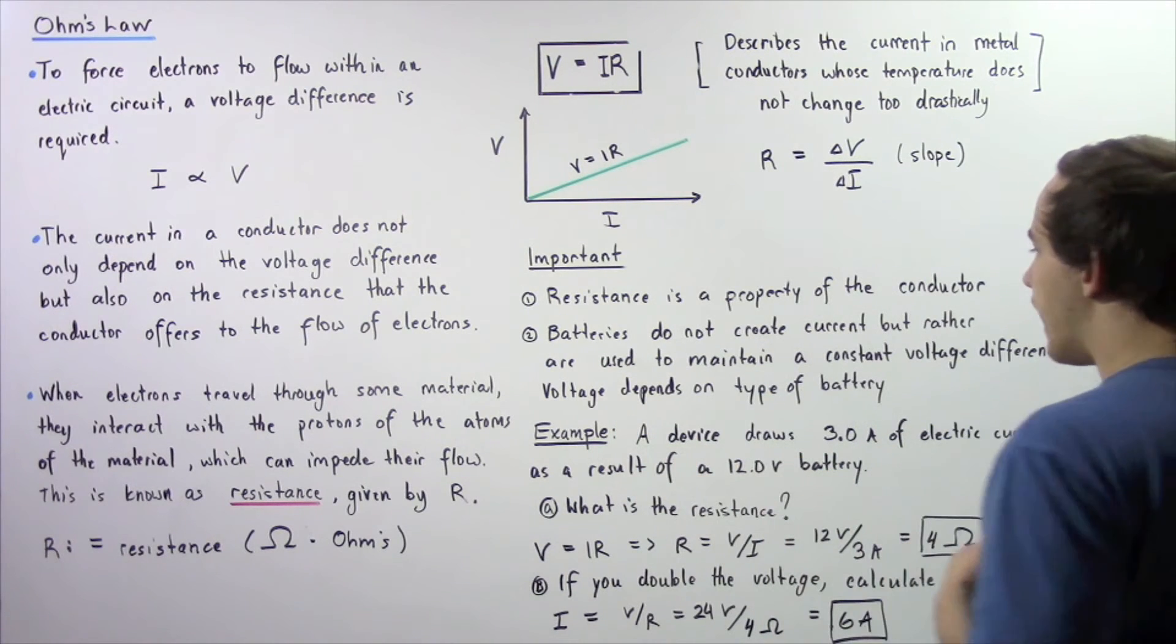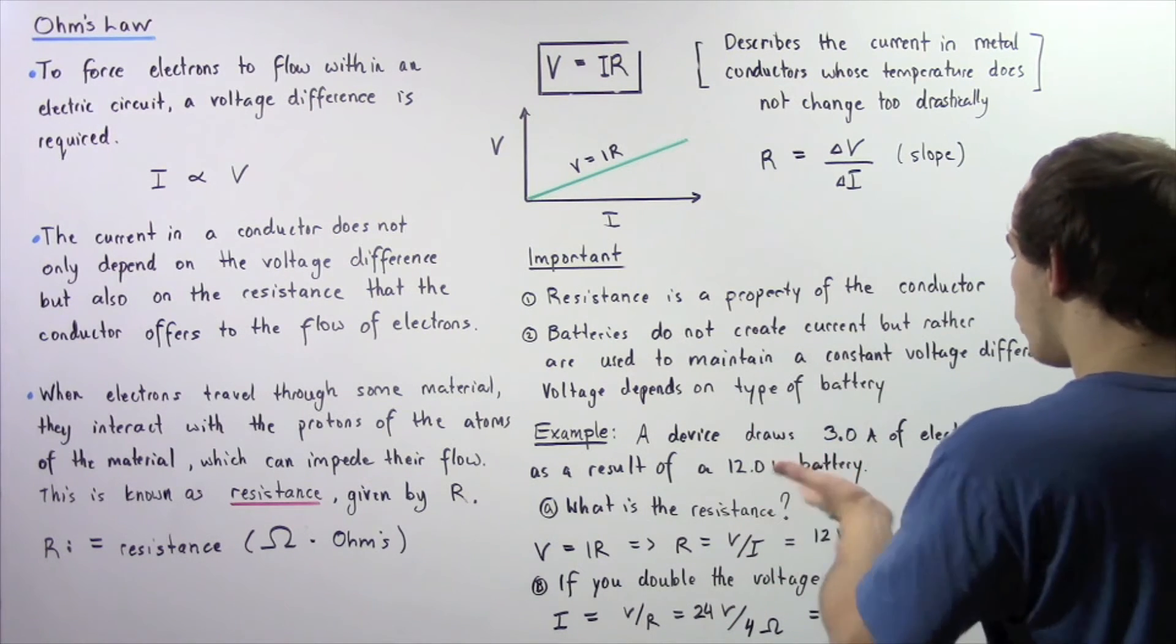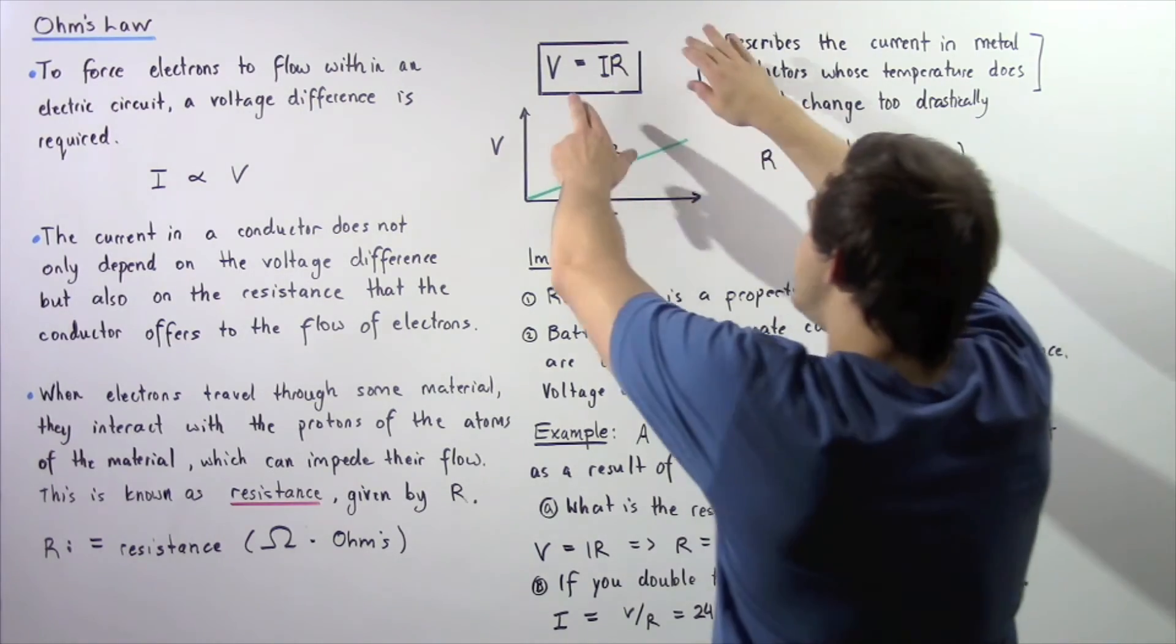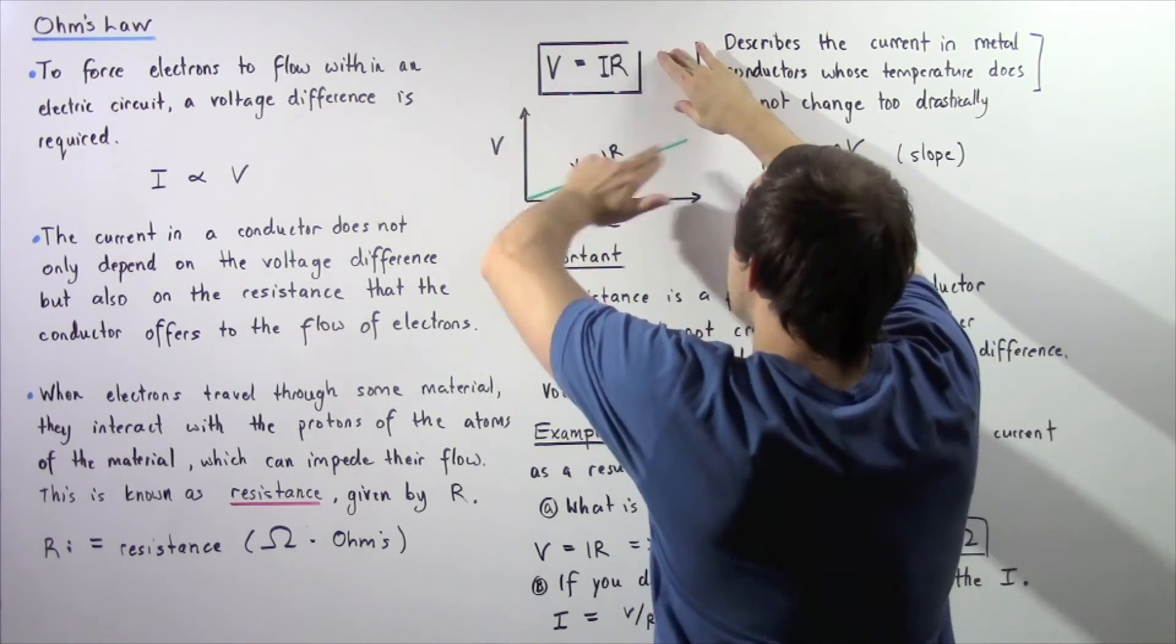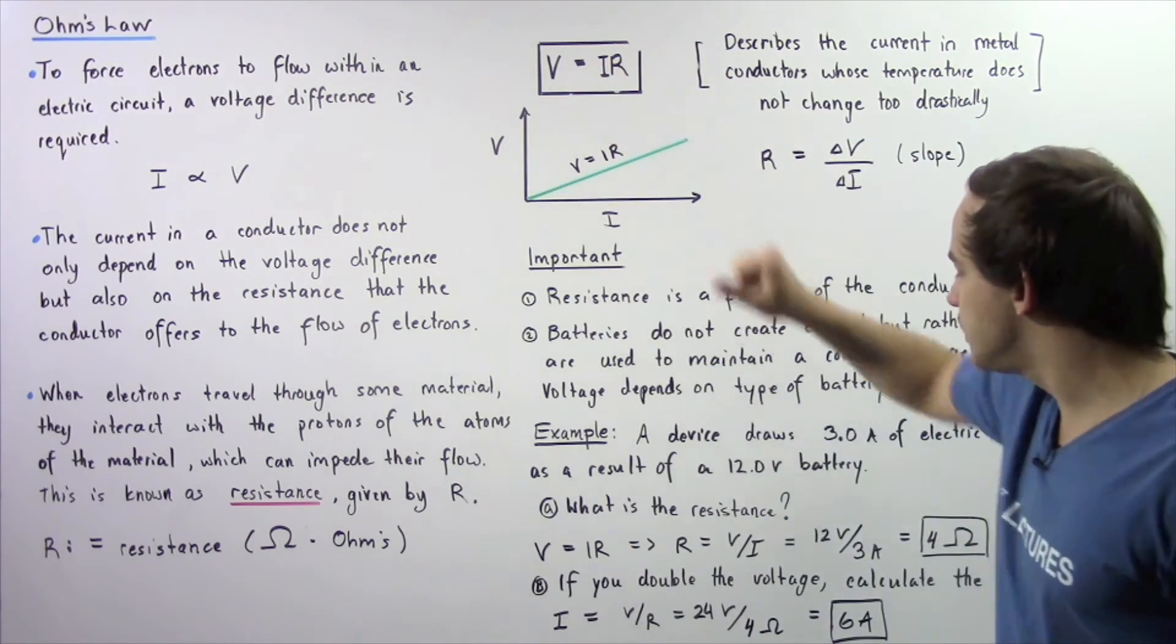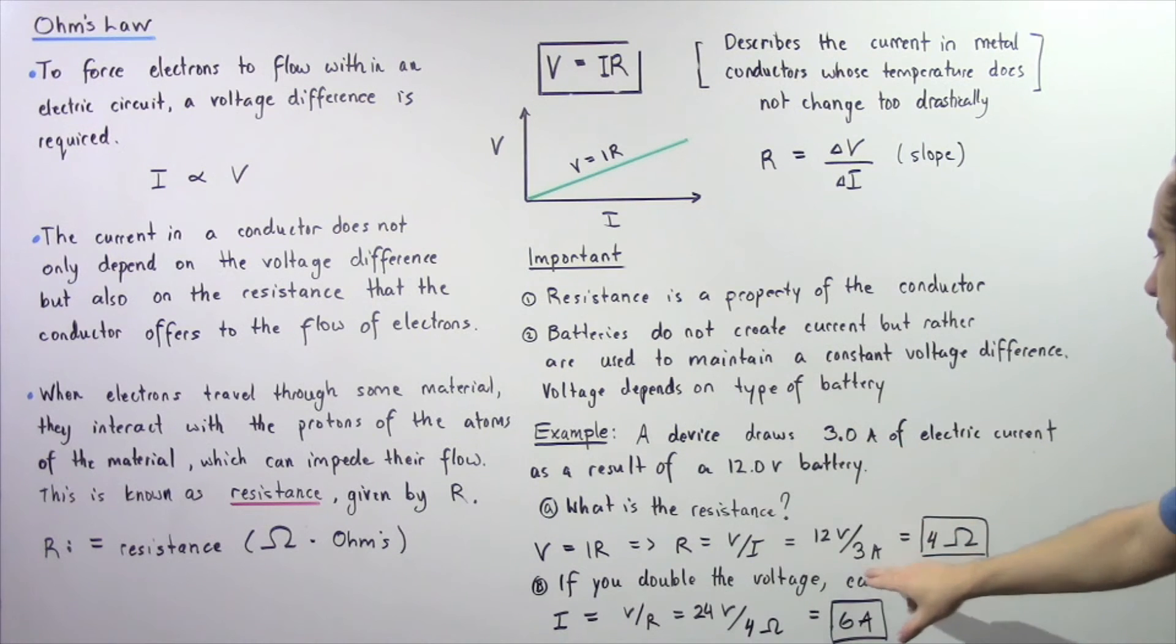Let's examine the following example. A device draws three amps of electric current as a result of a 12 volt battery. In part A, what is our resistance? We take Ohm's law, rearrange it and solve for resistance. We see that resistance is equal to voltage divided by electric current. So 12 volts divided by 3 amps gives us 4 ohms.